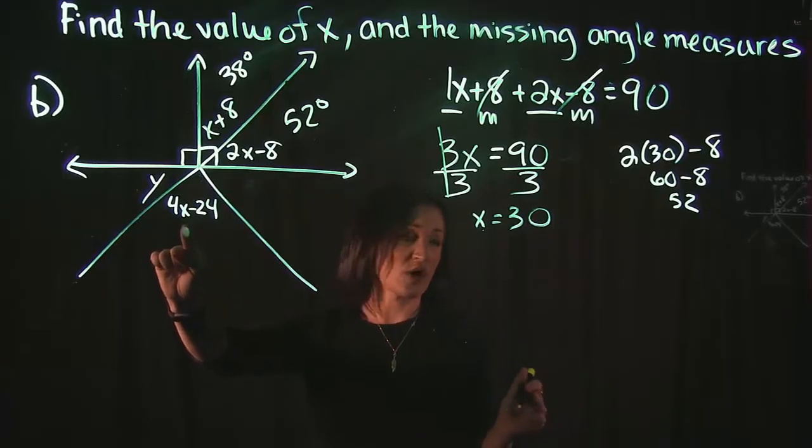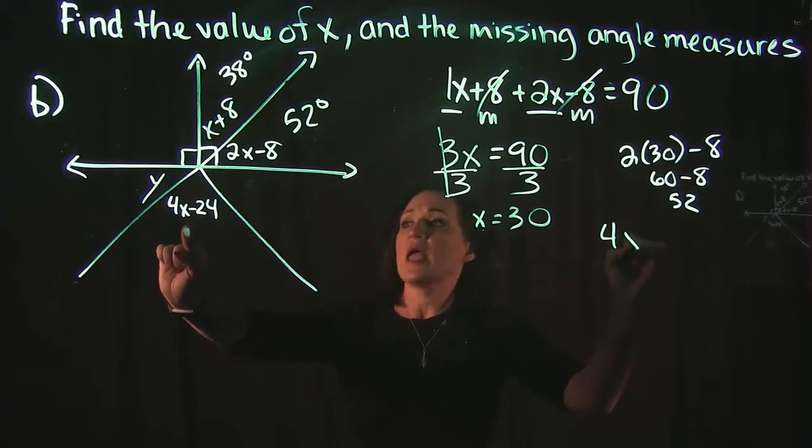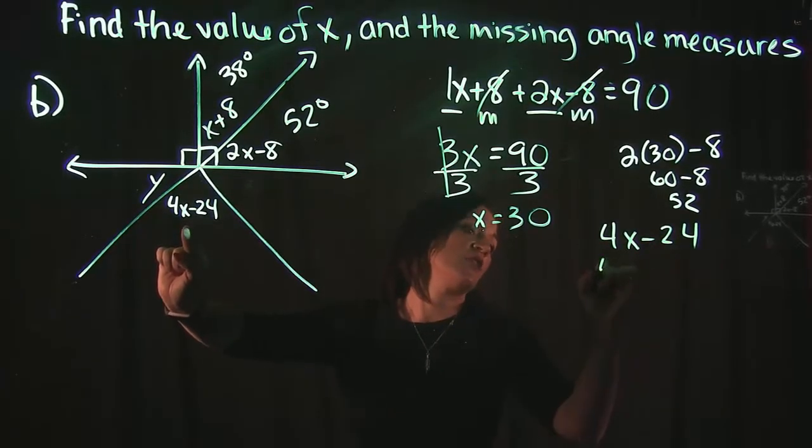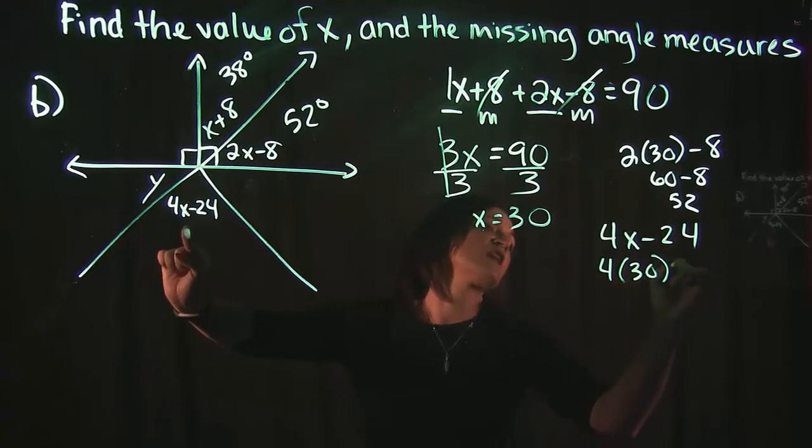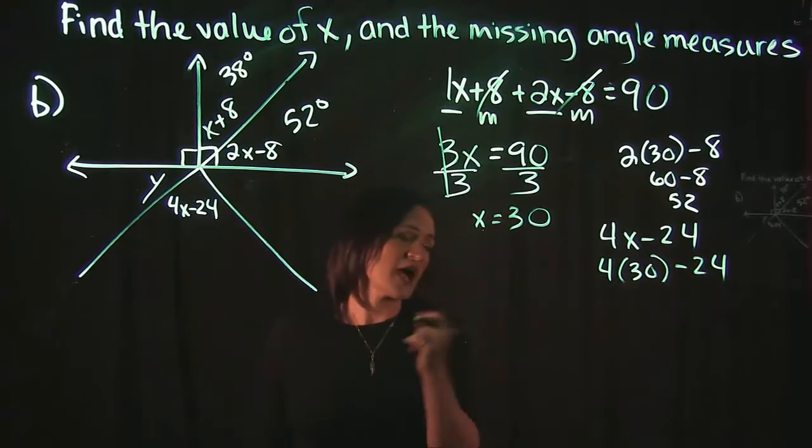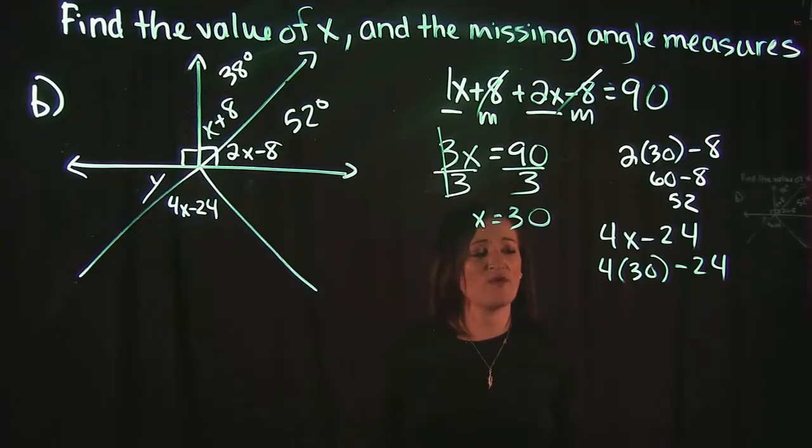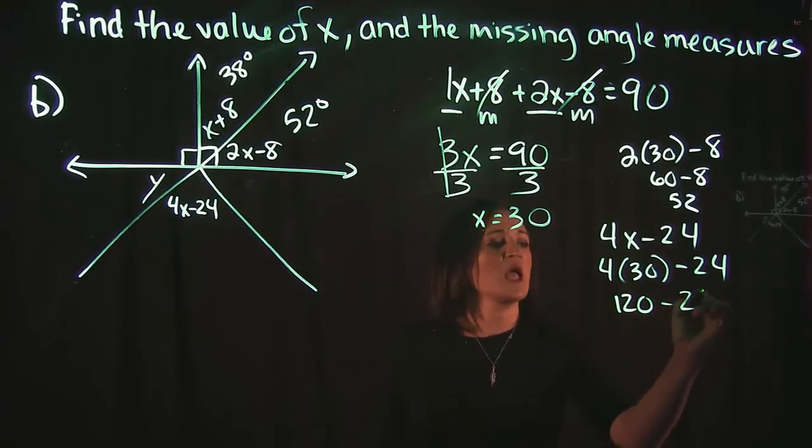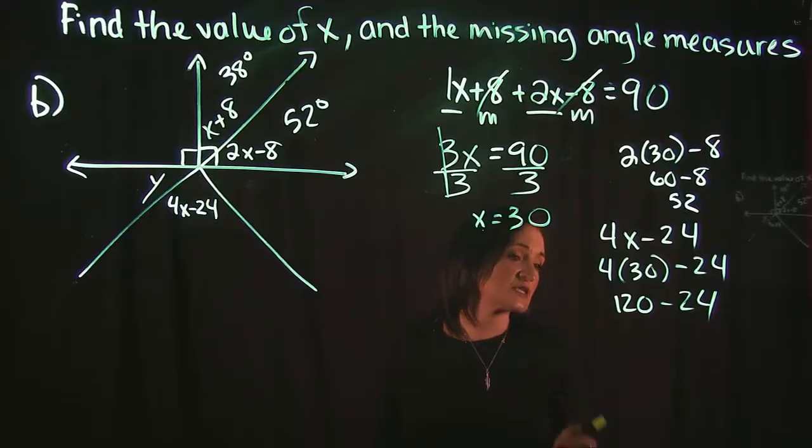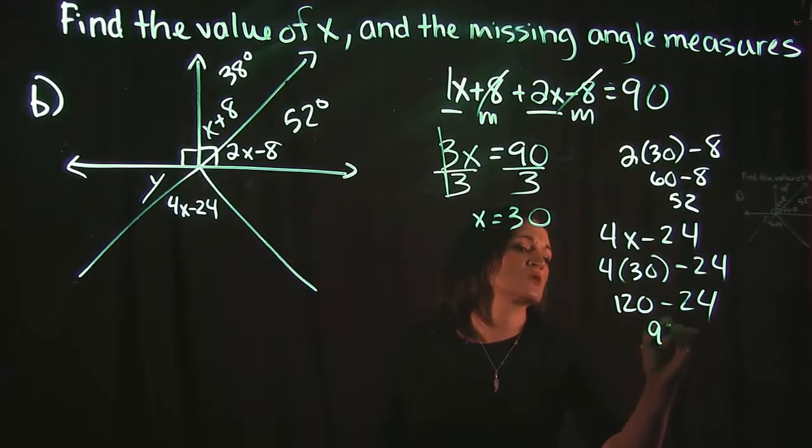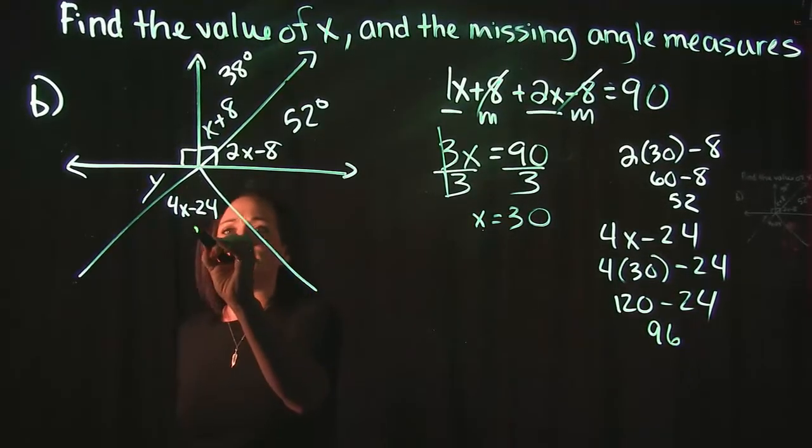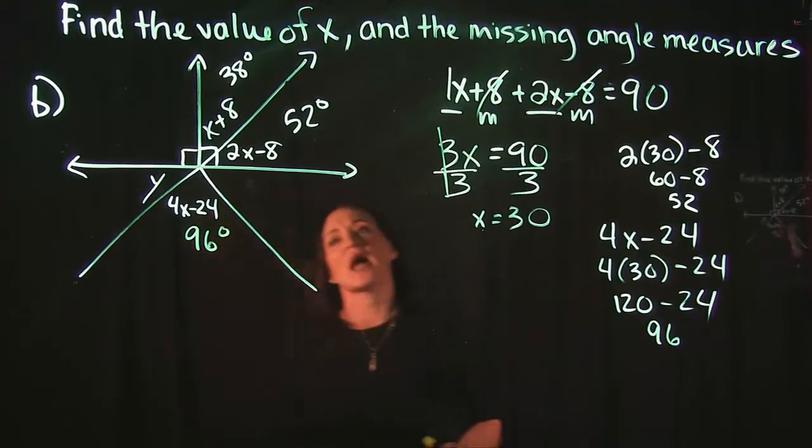We can even go a step further and plug in 30 for this one down here, the 4x minus 24. If we plug in the 30 for x on that one, we get 4 times 30 and then minus 24. 4 times 30 is 120. And 120 minus 24 is equal to 96. So that means this one here is 96.